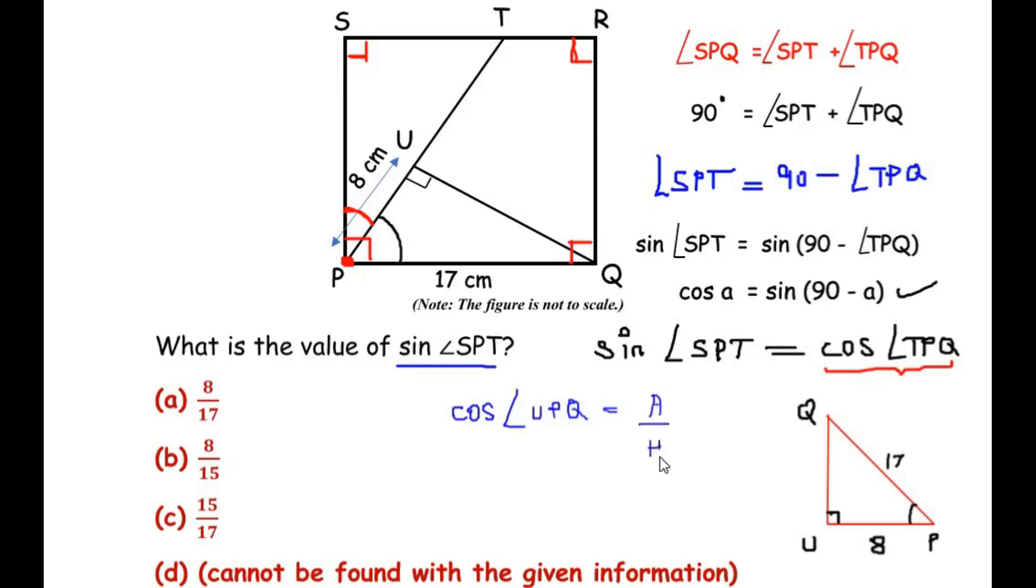Now which is the adjacent side, which is the hypotenuse? The angle of concern is angle P. Opposite to this angle will be the opposite side, and opposite to this 90 degrees will be the hypotenuse. The remaining side, that is UP, is going to be the adjacent side. So here we can write the adjacent side is 8 and the hypotenuse is 17.